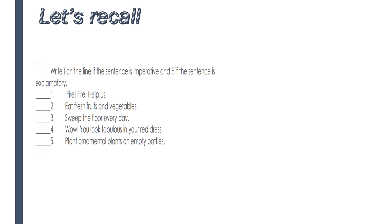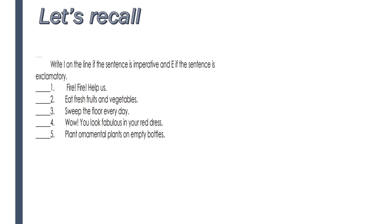In this activity, you write I if it is imperative and E if it is exclamatory. Number one is E — exclamatory. Numbers two and three are I. Number four is E. Number five is I.